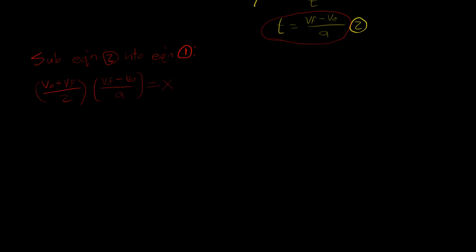If we multiply out the numerator, we get (V_f² − V₀²) / (2a) = x. We want to isolate for V₀². Multiplying across by 2a gives: −V₀² = 2ax − V_f², then subtracting V_f² and multiplying both sides by −1 and taking the square root gives: V₀ = √(V_f² − 2ax).